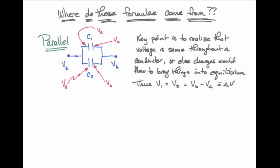As a result, the voltage difference across both capacitor number one and capacitor number two is just V sub B minus V sub A, which I'll call delta V.